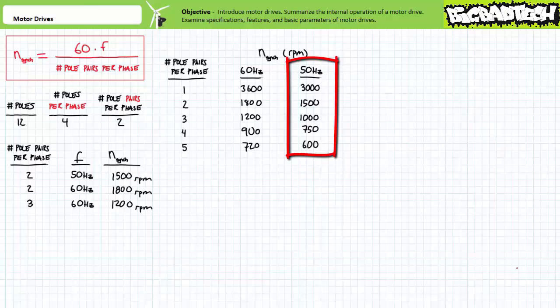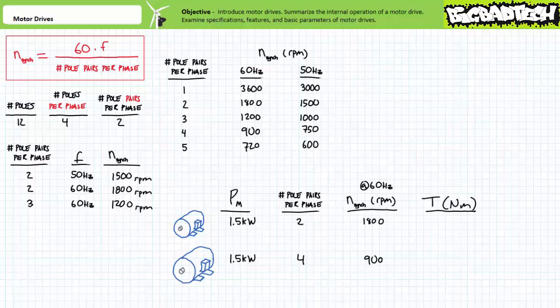In the EU, one would typically experience motors running at 3000, 1500, 1000, 750, 600 RPM, and so on. It should be noted that increasing the number of pole pairs per phase increases the physical size of a similarly rated motor. For example, a 1.5-kilowatt motor with four pole pairs per phase might be twice as big and heavy as a 1.5-kilowatt motor with only two pole pairs per phase.